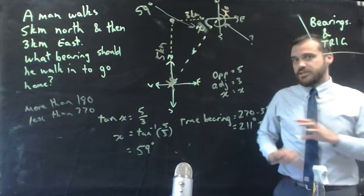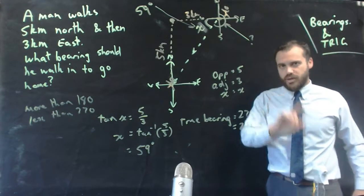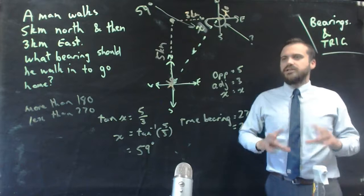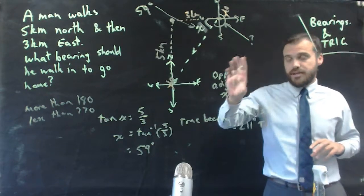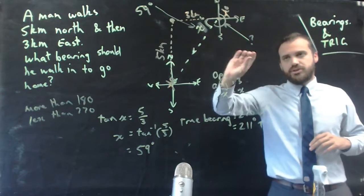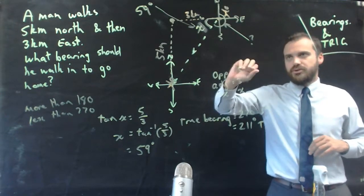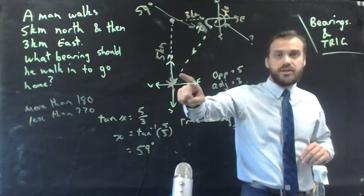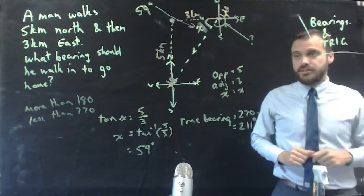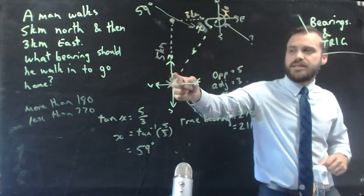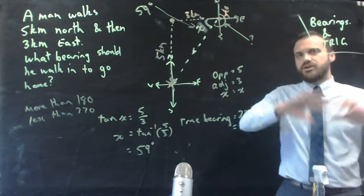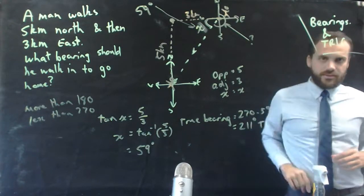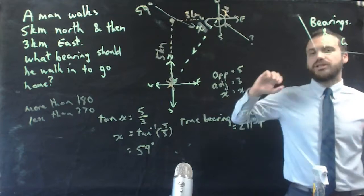What's important to understand is that this is one example of one question. We can ask you an infinite number of bearings questions. Really, the only thing you have to do is be able to draw a picture of whatever the question is asking. Once you can draw that picture, you can start figuring out angles or lengths. I could have asked how far does he need to walk — you could use Pythagoras for that. There's a whole range of bearings and trigonometry questions you might get asked. Draw the picture. Go from there.